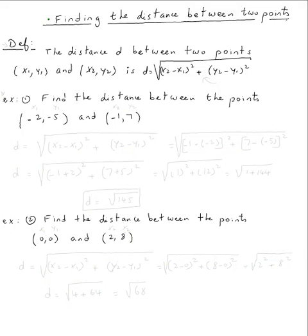The topic is finding the distance between two points. The definition says the distance d between two points, (x1, y1) and (x2, y2), is given by the formula: the square root of (x2 minus x1) squared plus (y2 minus y1) squared.